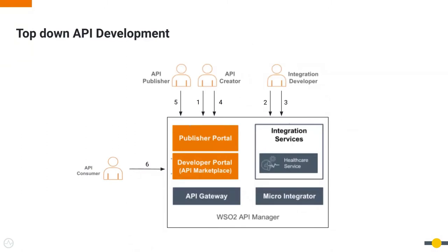This is the overall flow of the top-down API development, which is API-based integration. First, the API creator creates the API in WSO2 API Manager. Second, the integration developer pulls that API to Integration Studio and creates the integration service. Third, the integration developer deploys the service to the service catalog. Fourth, the API creator configures the service endpoint. Fifth, the API publisher publishes the API, and the API consumer can subscribe and invoke it.